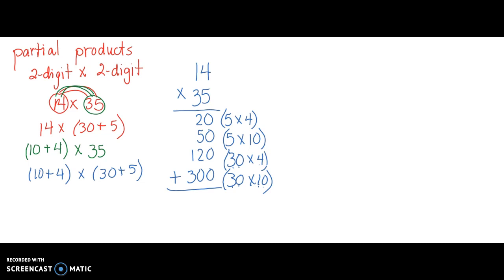Now let's add these together. The ones place — all those zeros — equals 0. 2 plus 5 plus 2 equals 9 in the tens place, and 1 plus 3 is 4 in the hundreds place, giving us 490.